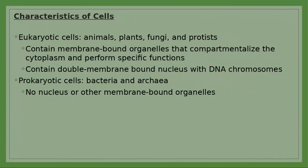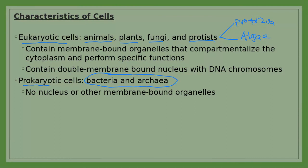So again, there are two types of cells: eukaryotic cells — including animals, plants, fungi, and protists (which include protozoa, primitive organisms that resemble animals) — and prokaryotic cells, which are all bacteria.